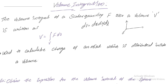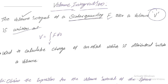Now let us come to volume integration. In line integrals and surface integrals we considered vector quantities, but here we consider a scalar quantity. The volume integral of a scalar quantity F over a volume is written as the volume integral of F·dV, where dV is the differential volume that depends upon the type of coordinate system.